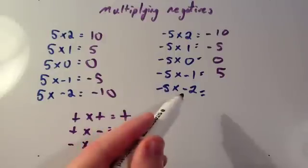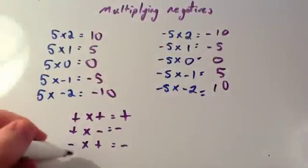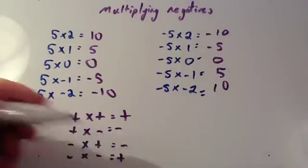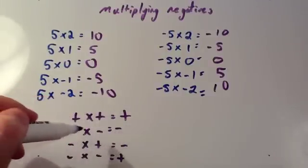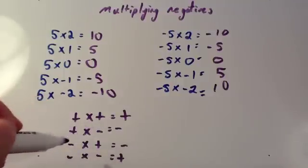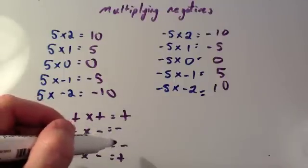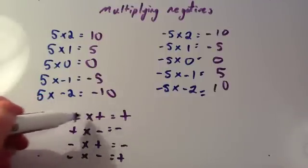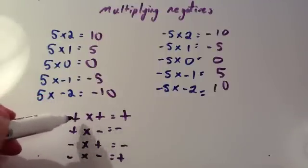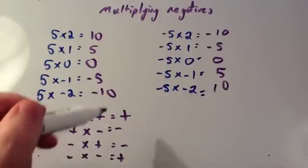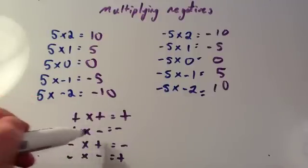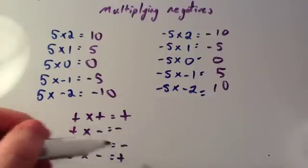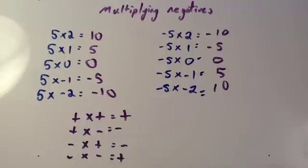Minus 5 times minus 2 is 10. So we have got our four different rules: a positive times a positive is a positive, a positive times a negative is a negative, a negative times a positive is a negative, and a negative times a negative gives you a positive. In other words, if the things you're multiplying together have the same sign — two positives or two negatives — you get a positive answer. If the two numbers are different to each other — positive and negative, or negative and positive — you get a negative answer. Let's look at a couple of examples now.